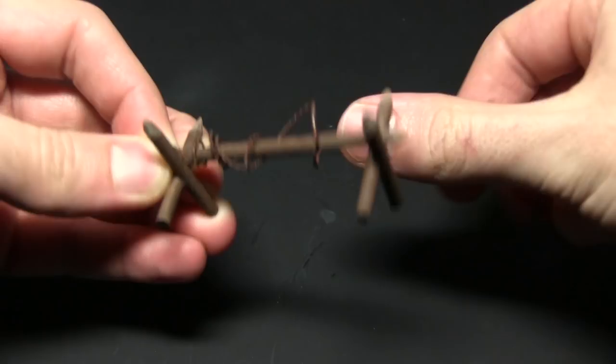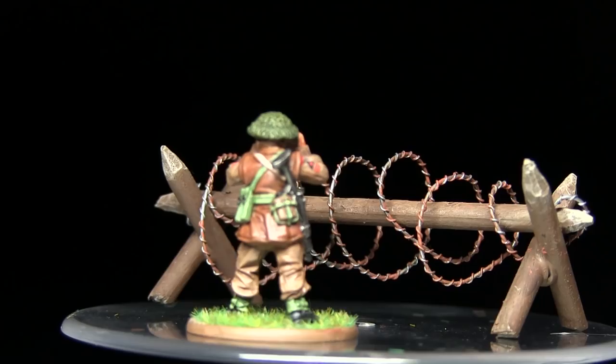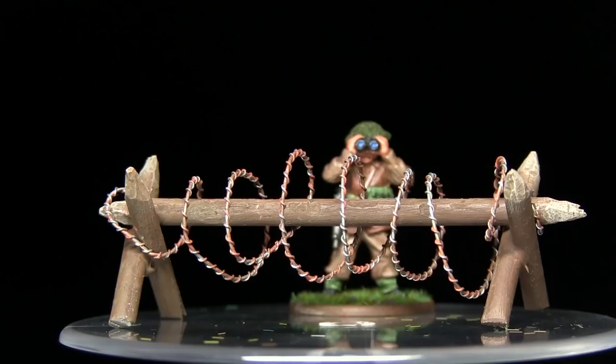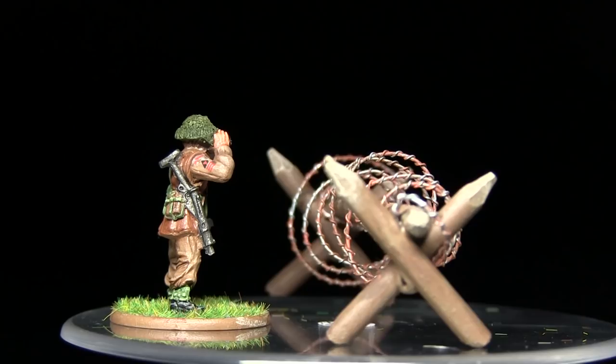Here we have the completed obstacle alongside a Bolt Action miniature for scale purposes. We've left this without a base, which means you can apply it to any type of terrain. This is personal preference—you could easily mount it onto a small piece of MDF with basing sand and static grass. If you enjoyed this video, please let me know what you thought. I haven't done any scenery tutorials in the past and would like to know your opinions. If you haven't already, be sure to check out my Facebook page and consider supporting me on Patreon—you can find links in the description below. Until next time, thanks for watching and goodbye.